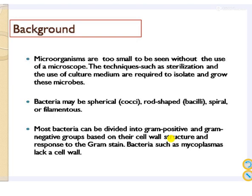Bacteria may be spherical, rod-shaped, spiral, or filamentous. Most bacteria can be divided into gram-positive and gram-negative groups based on their cell wall. We will study the gram staining technique in a later part of the chapter. For now, understand that bacteria are broadly categorized into two classes based on their cell wall: gram-positive and gram-negative.